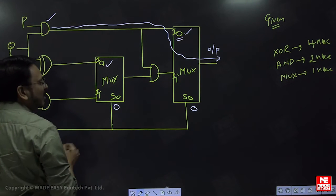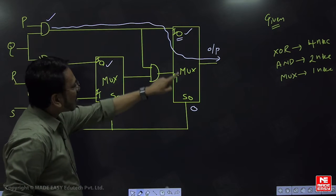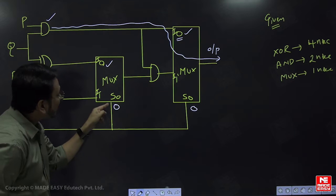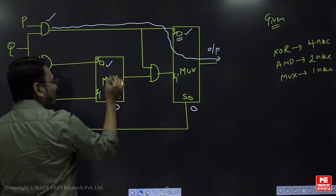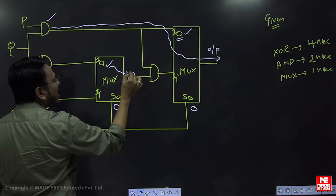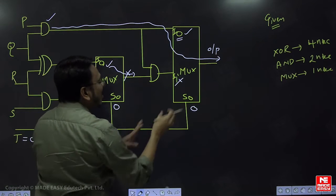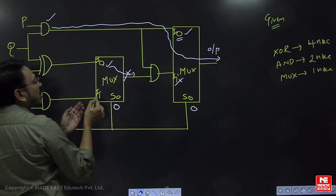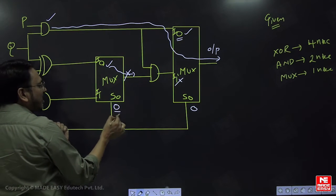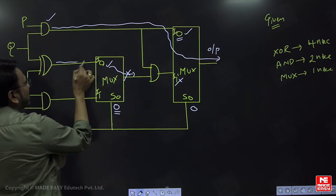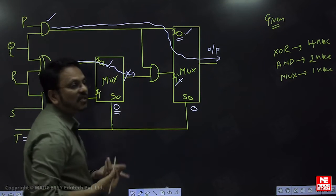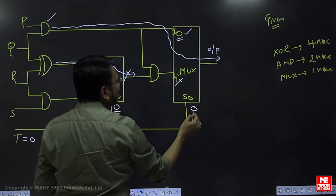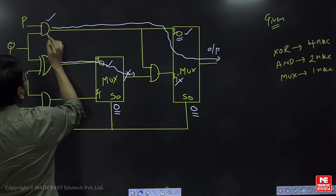A student asks: what about i-one — won't it be operated? The answer is: for this zero select line, i-one is not selected for our concern. Even though the zero at another place operates something, the output through the unselected path is not relevant to us. For this particular select line zero, only i-naught will come through and that's all we consider.